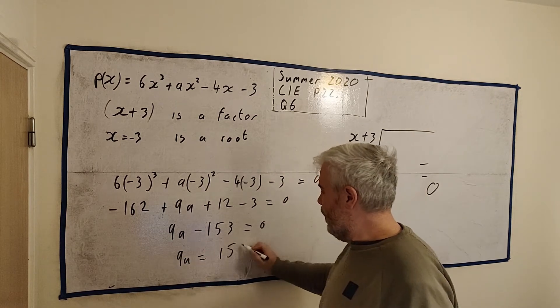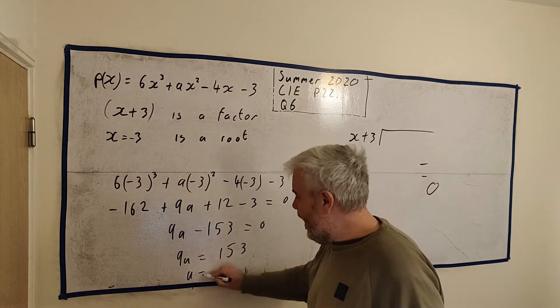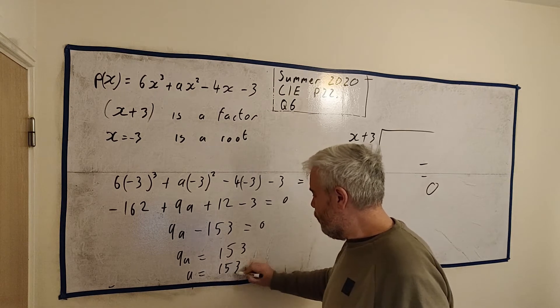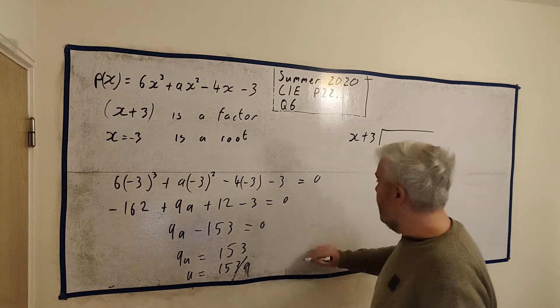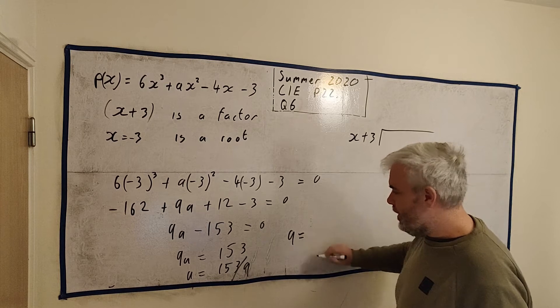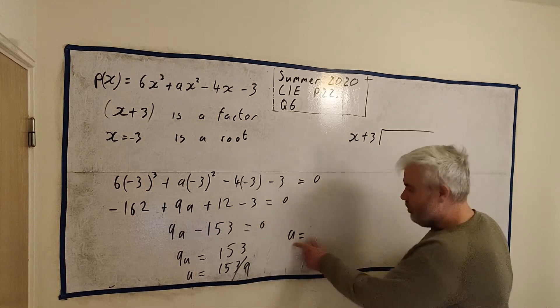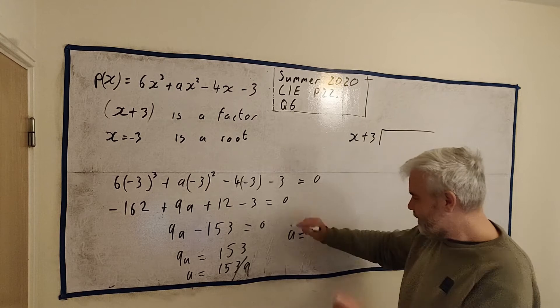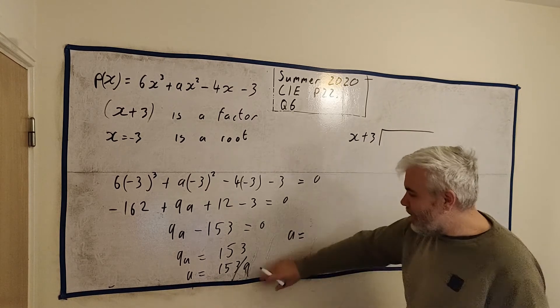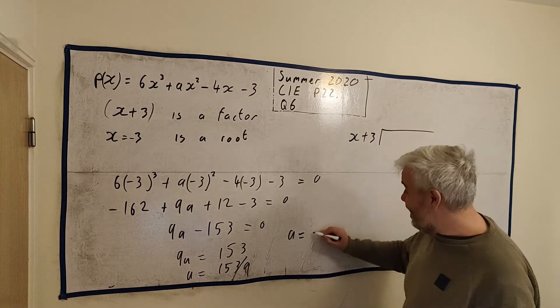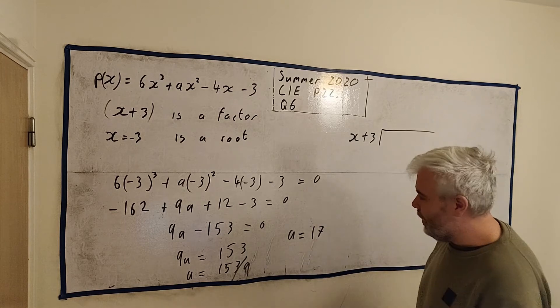9a is equal 153. a is equal 153 divided by 9, which means a is equal to 17. So that's the answer to part a.